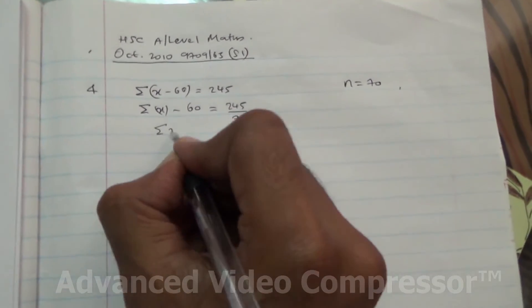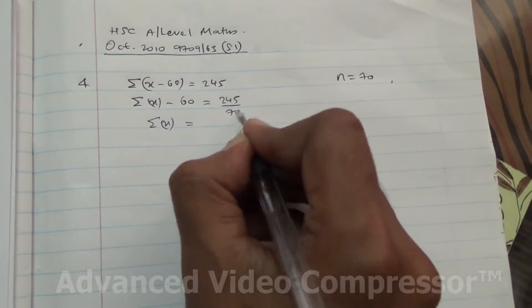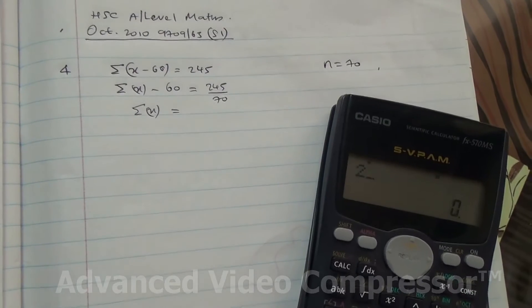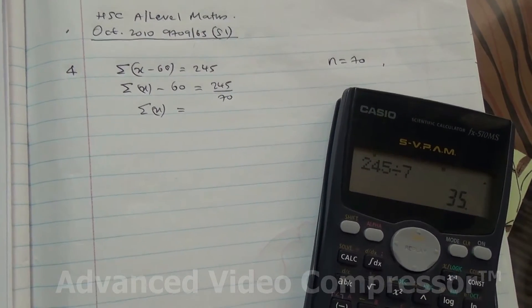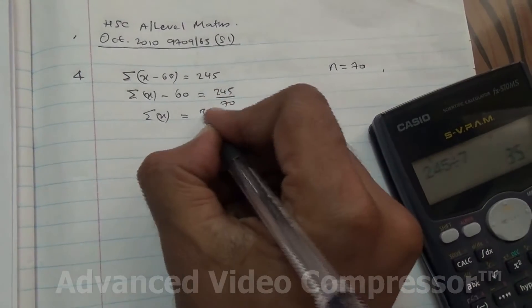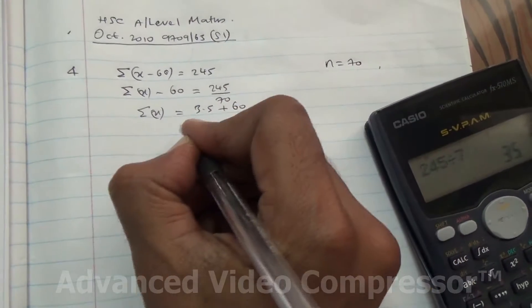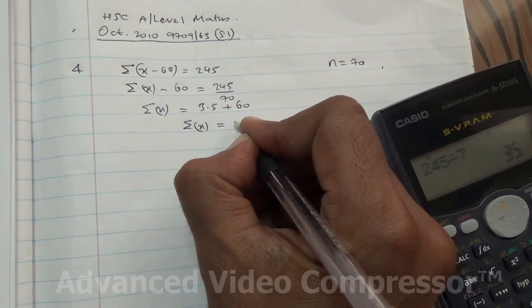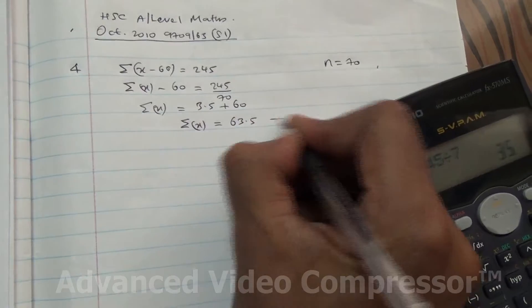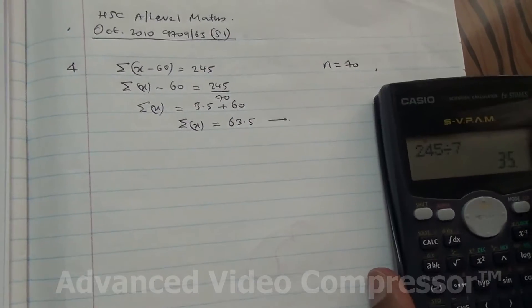So we got then summation of x is equal to 245. 245 divided by 70 is 3.5. You send the 60 on the other side, it becomes plus. So the summation of x is going to be 63.5, and here we are. That's the mean.